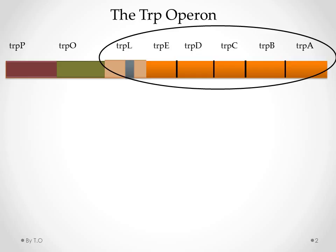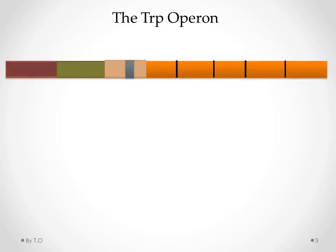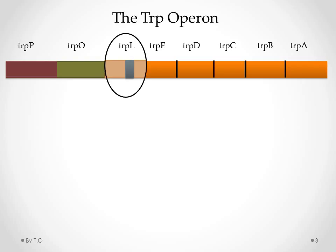The TRIP operon is composed of tryptophan structural genes that code for proteins that make tryptophan. TRIP L is the leader region.